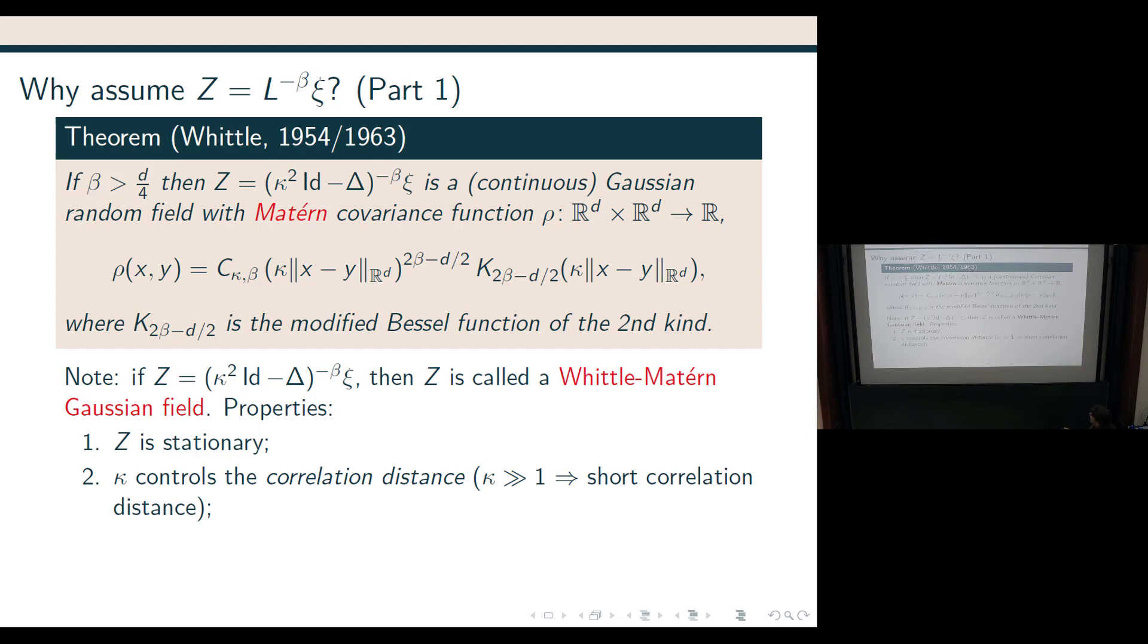And this kappa, as you might expect when you look at the definition, it controls the correlation distance, right? I mean, if you take, if kappa goes to infinity, then you're basically, roughly speaking, just dealing with the identity here, so you're going towards the white noise case, whereas when kappa goes to zero, then you'll have this nice smoothing from the Laplacian. So, indeed, when kappa is very big, I have a short correlation distance. And you see it also in the formula, right? The kappa comes in as scaling.